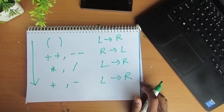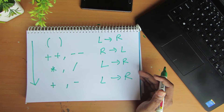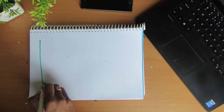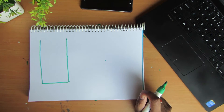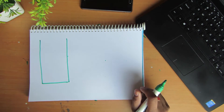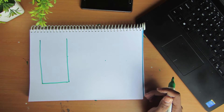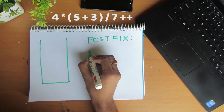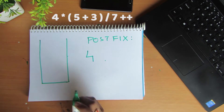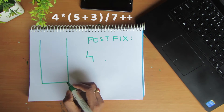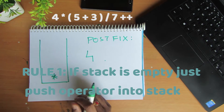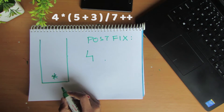We will use this precedence chart to implement the algorithm to convert to postfix expression. Let's take an example and convert it into postfix using a stack. The first rule is: operands go directly into the postfix expression, whereas operators go into the stack first. The first character is 4, so it will directly go into the postfix expression. The next one is multiplication, so it will go into the stack. Since the stack is empty, it is just pushed. The next one is an opening parenthesis.